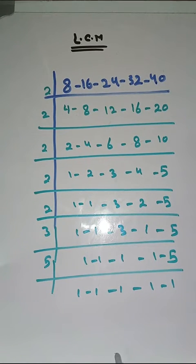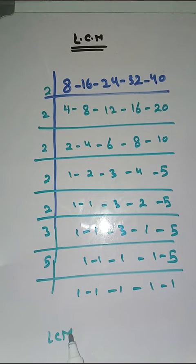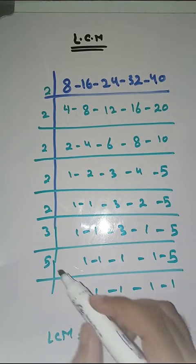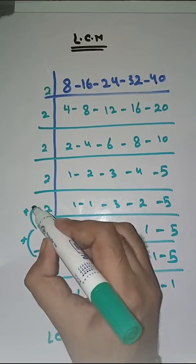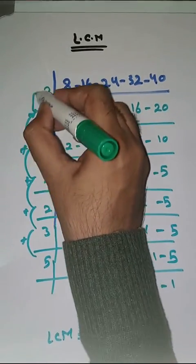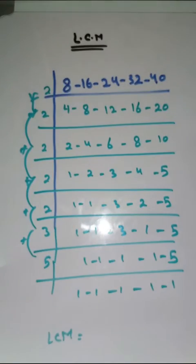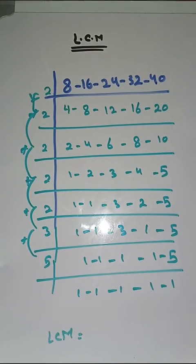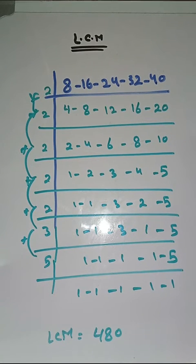So, LCM of these numbers is equal to product of prime factors, which is 5 × 3 × 2 × 2 × 2 × 2, which is equal to 480. So, LCM of 8, 16, 24, 32 and 40 is 480.